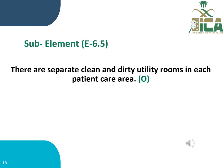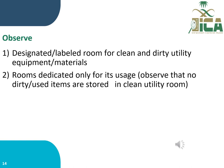Sub-element E6.5 states that there are separate clean and dirty utility rooms in each patient care area, evaluated through observation. The auditor observes designated and labeled rooms for clean and dirty utility equipment, confirms each room is dedicated only to its intended use — dirty utility rooms only for dirty equipment, clean utility rooms only for clean supplies — and verifies no dirty or used items are stored in the clean utility room.